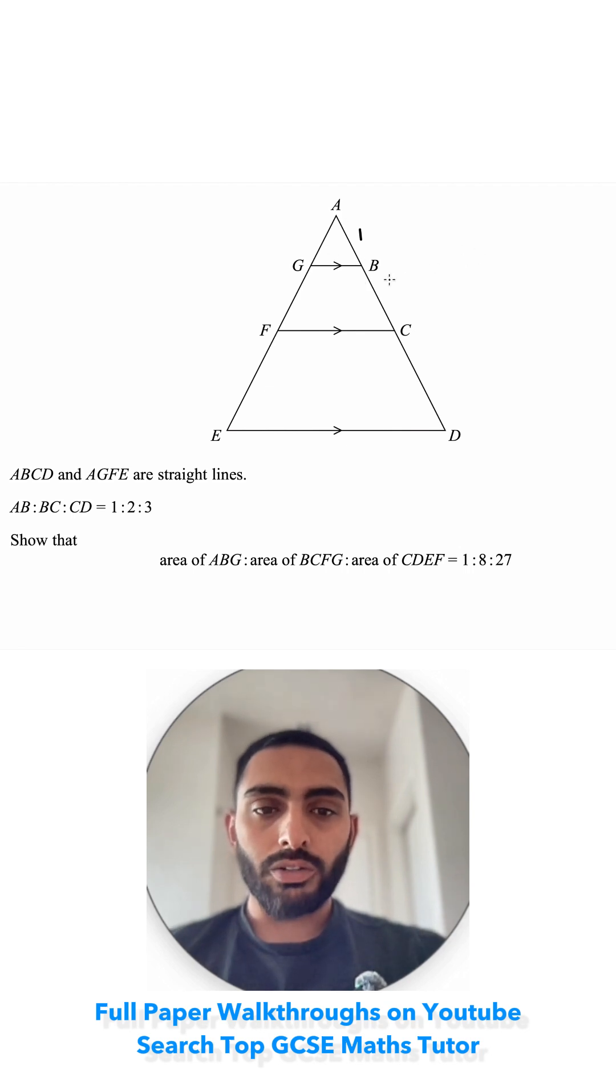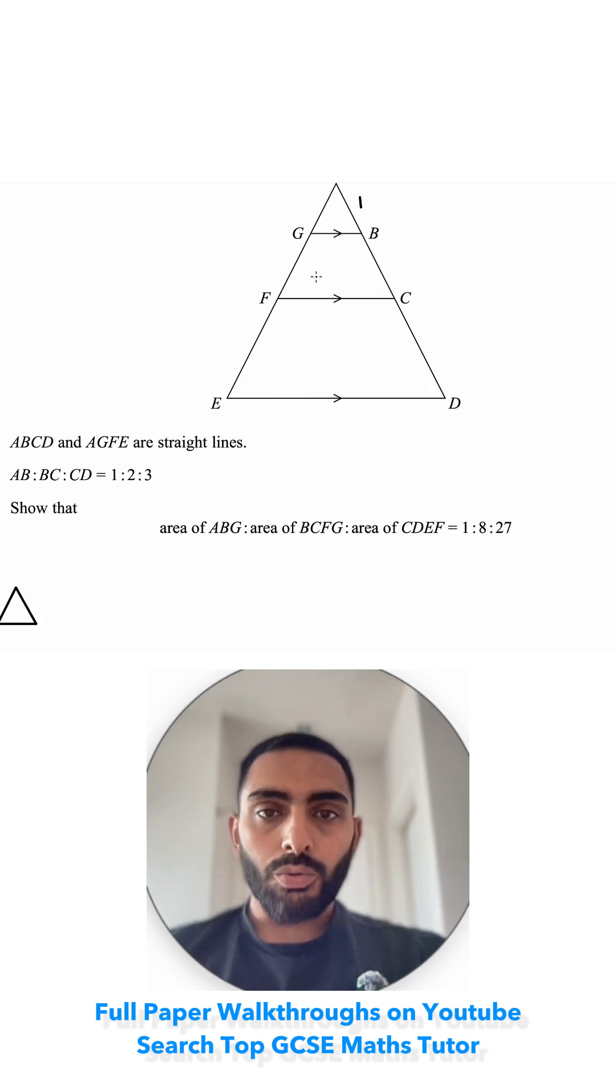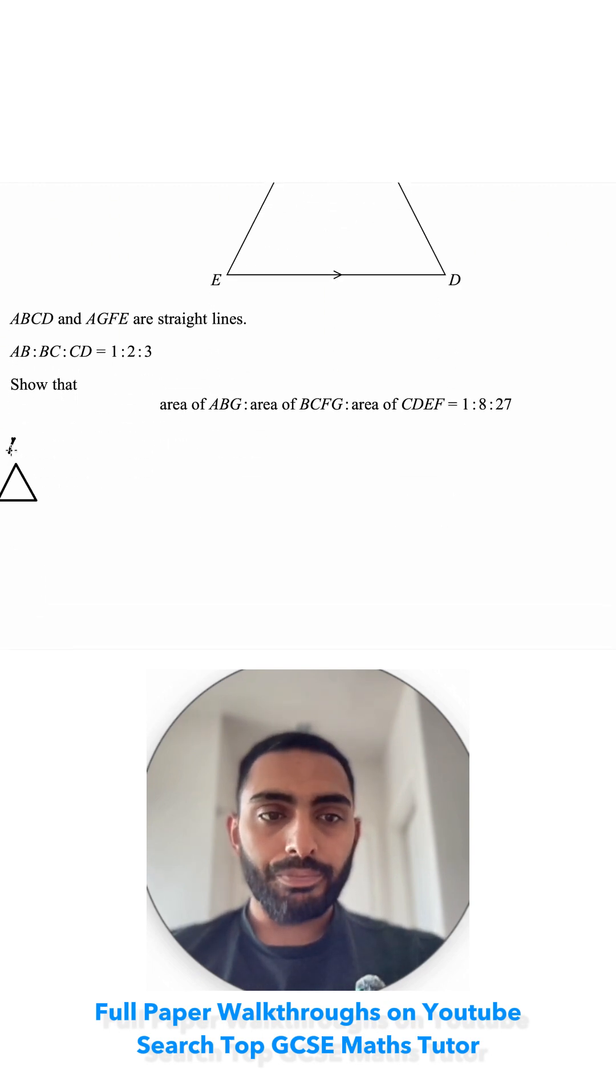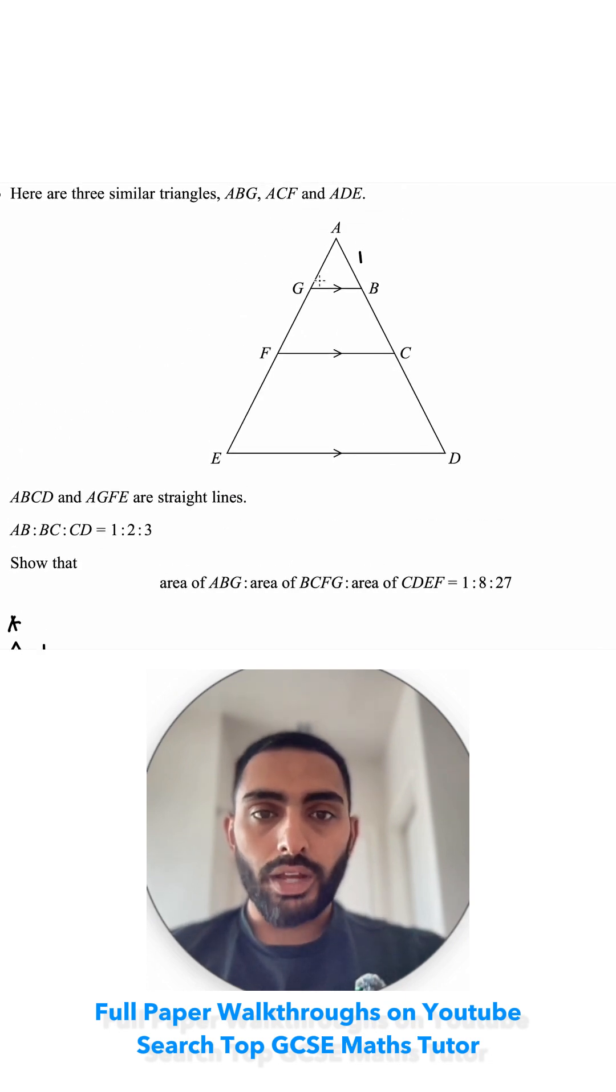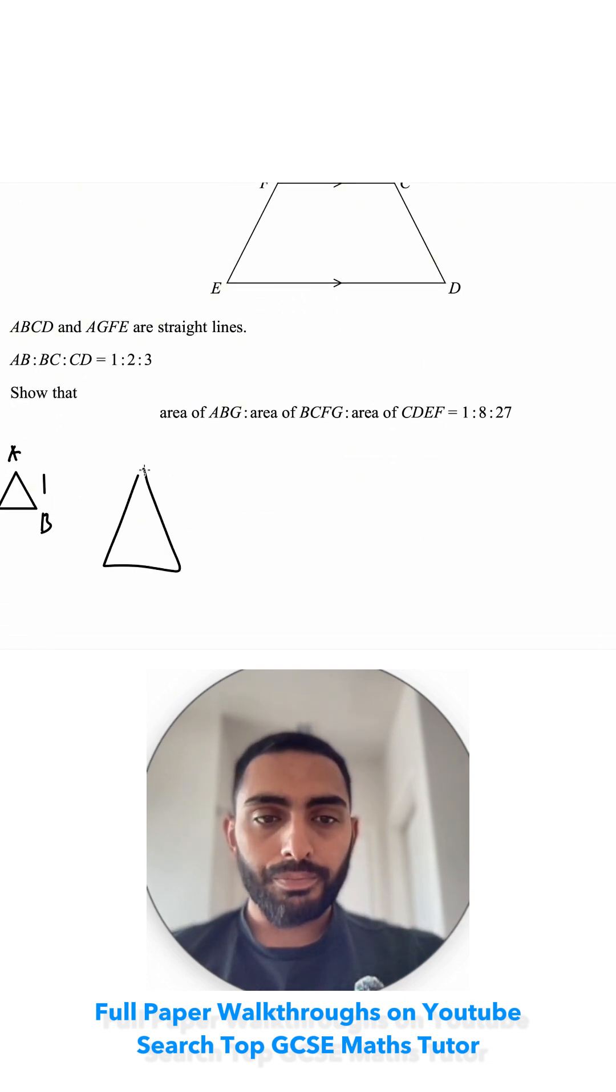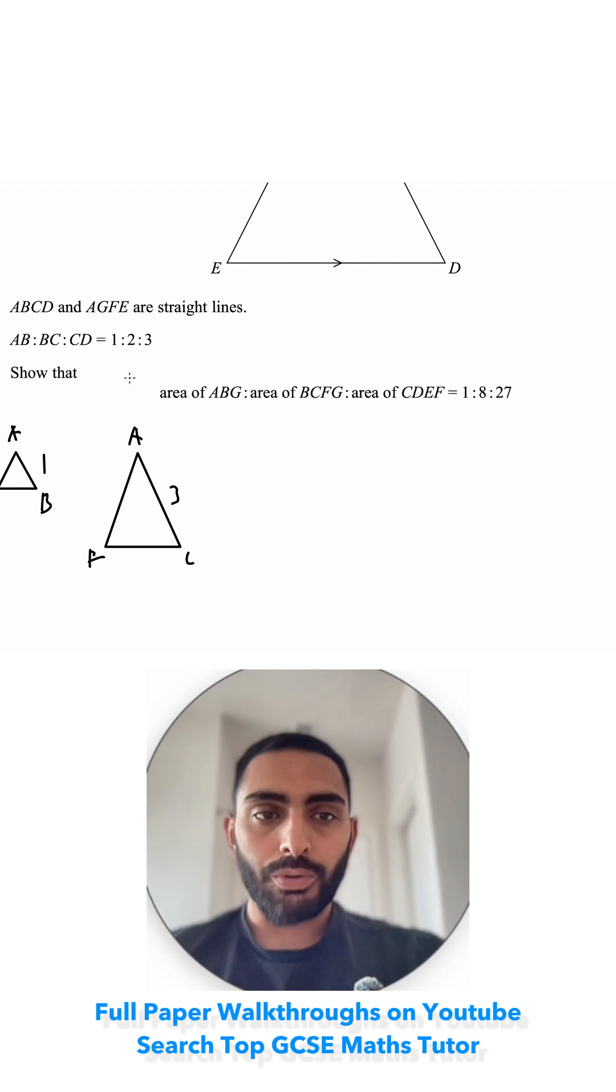I'm going to draw these as separate triangles just so that I can see a little bit more clearly. I've got my first triangle, which is a small one, AGB, and that length is 1. Then for the next one, I've got AFC. I'm told that BC is 2, so B to C is 2, but I know AB is 1, so 1 and 2 would be 3, so that length would be 3.